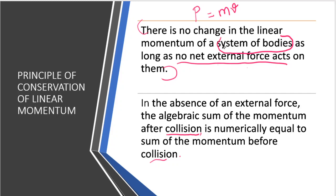What is system of bodies? To calculate linear momentum, we need at least one moving body. For linear momentum, we need a moving object. So, when we say system of bodies, there is more than one moving body. That is the first concept.